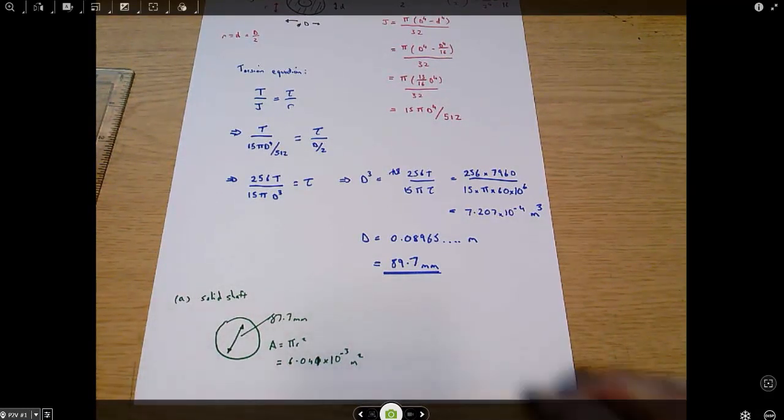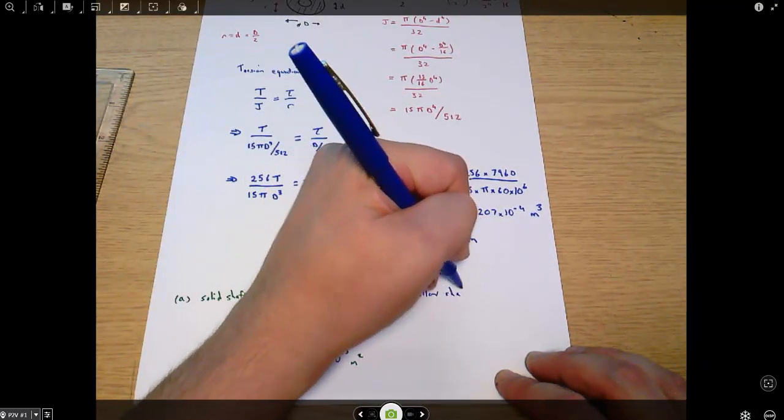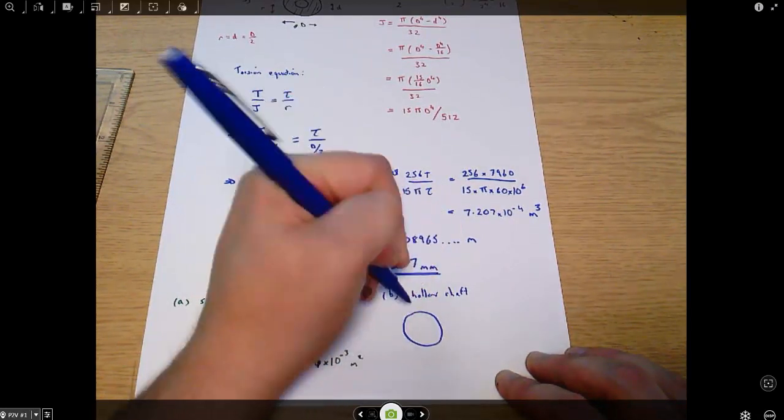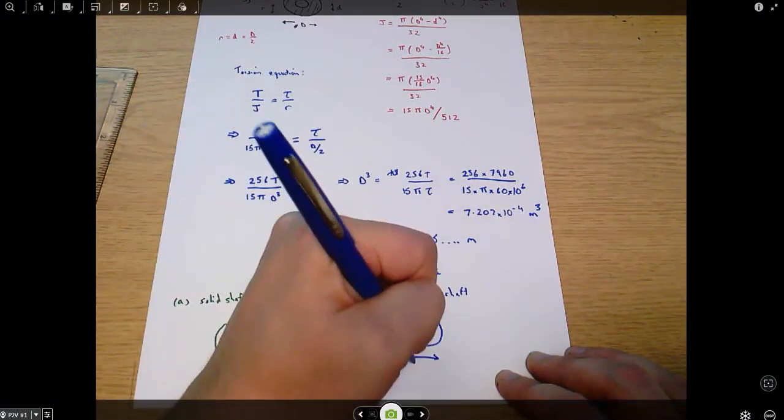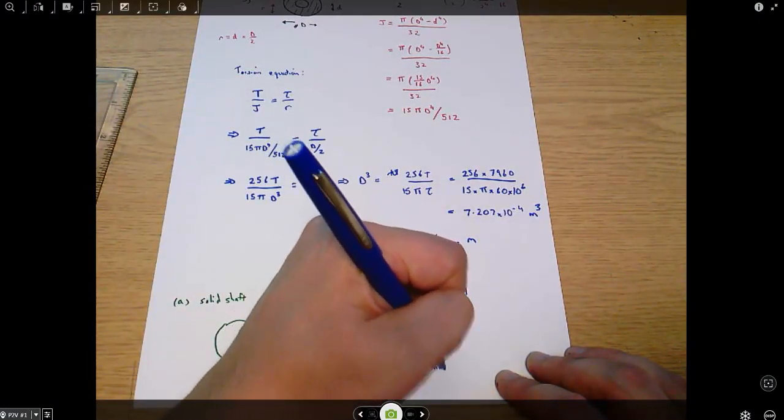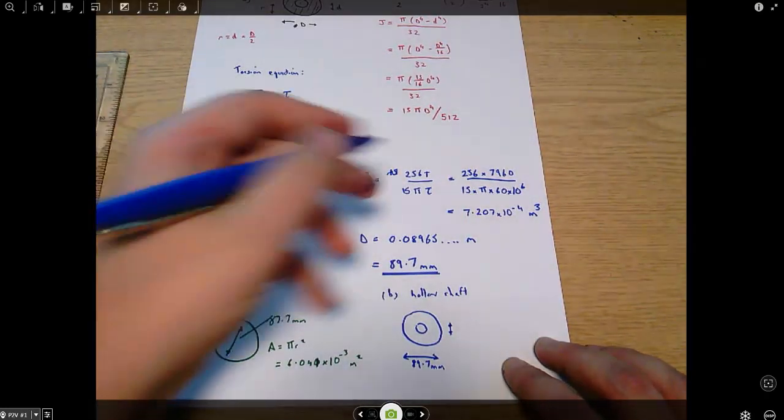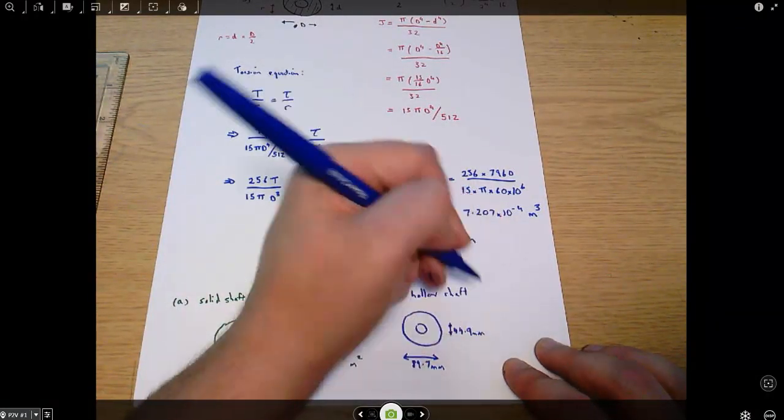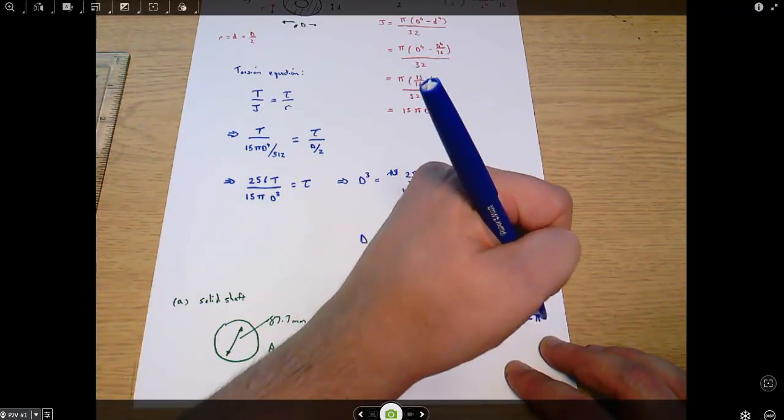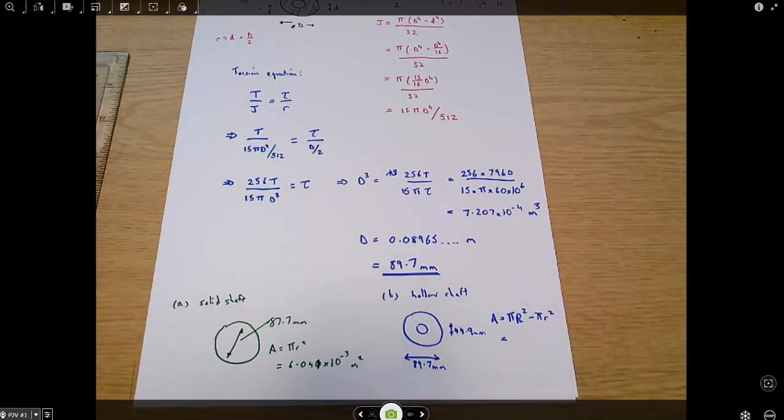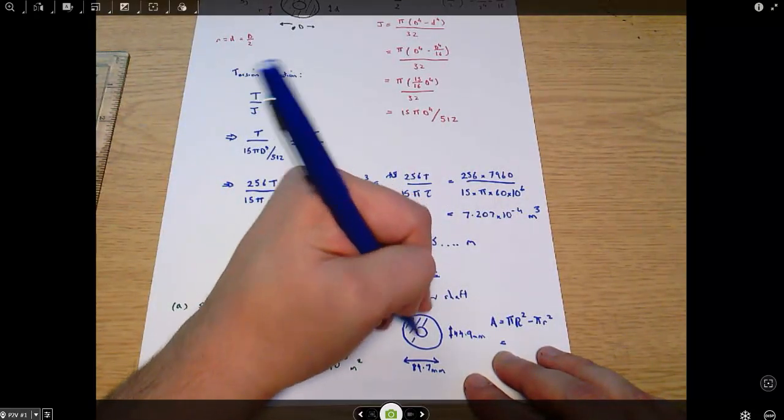And in part B, where we had a hollow shaft, we've got an outside diameter of 89.7 millimetres and an inside diameter of one half that, which is 44.9 millimetres to 3 decimal places. And the area is going to be pi times the outer radius squared minus pi times the inner radius squared. So it's the area of the big circle minus the area of the small circle. That's to get the shaded area here.